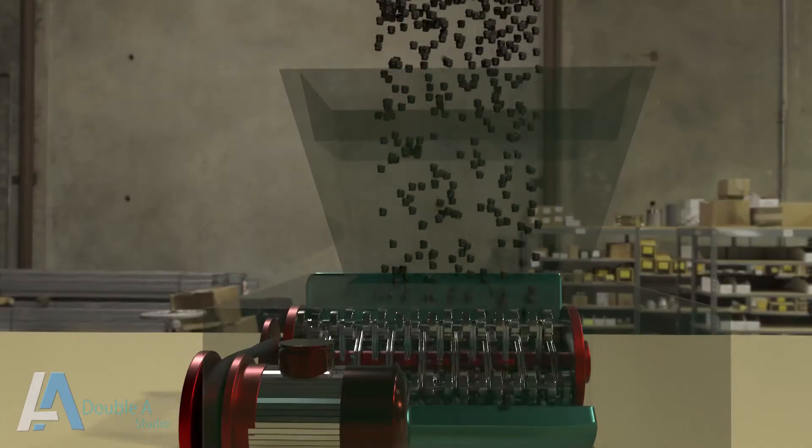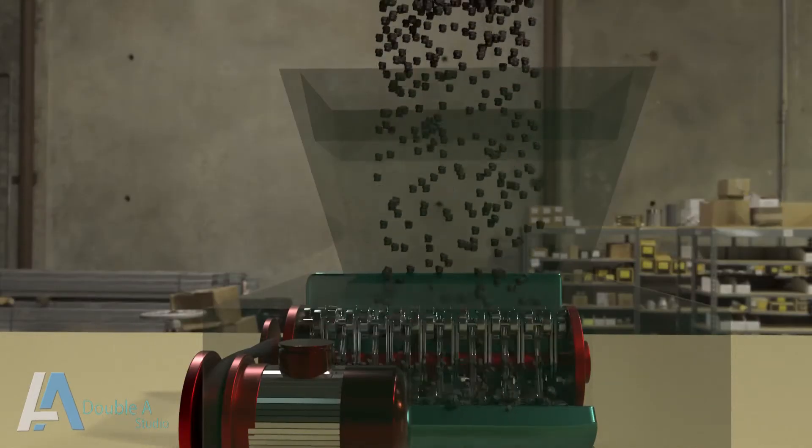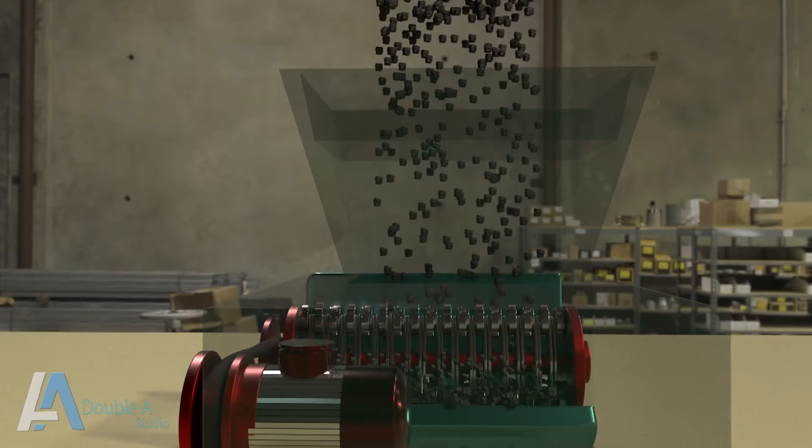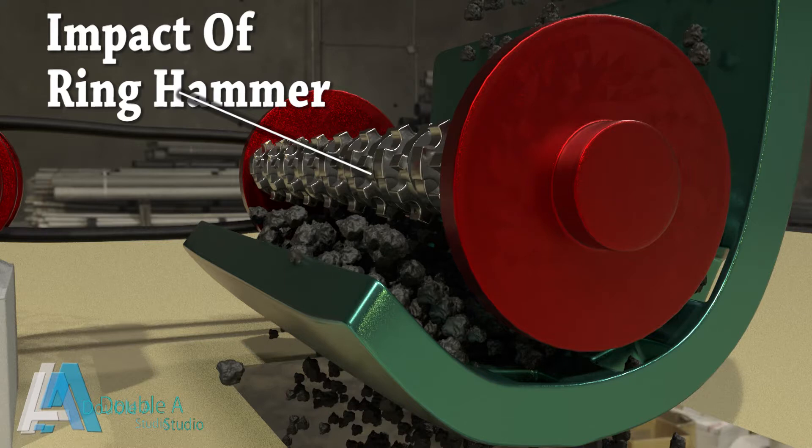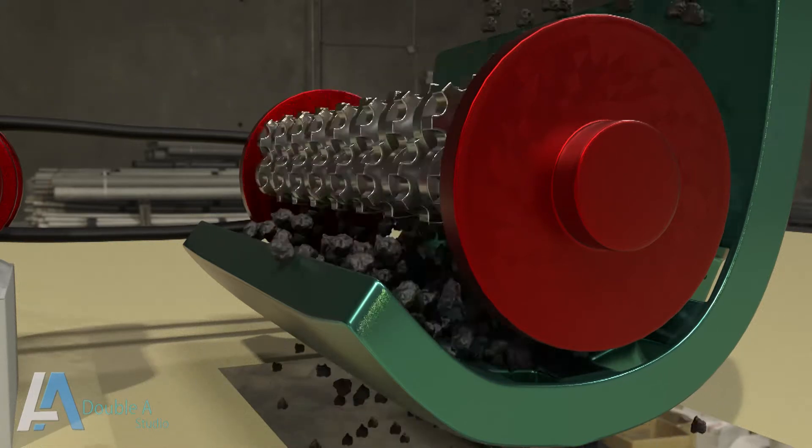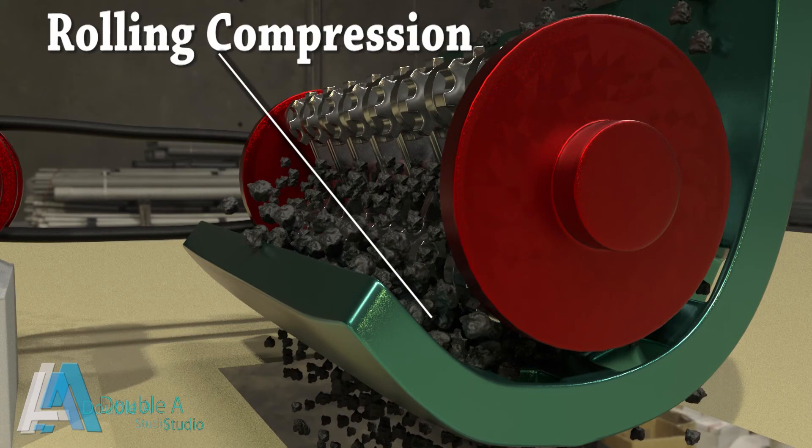When coarse coal is fed from the chute, crushing takes place by two types of action. One is by the impact of ring hammers and the other is by rolling compression between crushing plate and ring hammer.